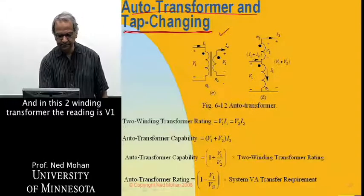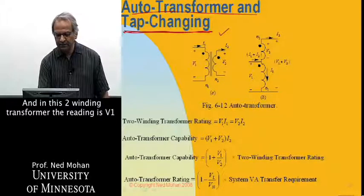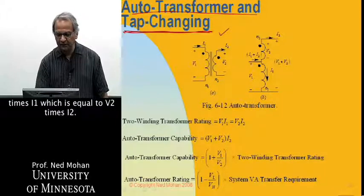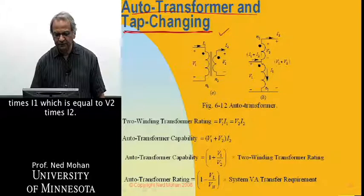And in this two-winding transformer, the rating is V1 times I1, which is equal to V2 times I2.